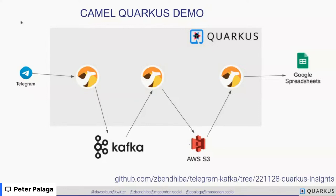In a perfect world we'd want all 350+ Camel components available in Quarkus and working natively. In practice, some components work in Quarkus but not in native mode — either because native tests haven't been written yet or because those components often integrate with older systems that use non-native-friendly patterns. The set of natively-supported components is growing, and community contributions of native tests are always welcome.